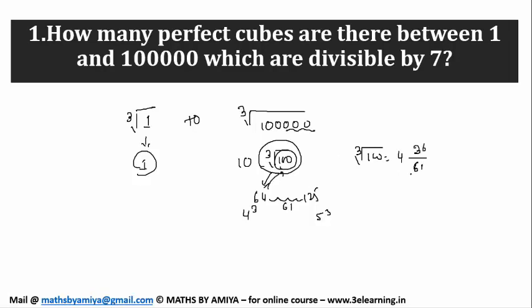So this is approximately 36 by 61 and I think approximately 4.5889. So this one is approximately 4.6. I think it's clear. So this is approximate value. So third root of hundred is 4.6 and 10 into this is nothing but 46.